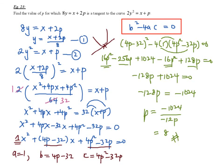The second type is when a straight line intersects the curve at only one point — that is, when the straight line is the tangent to the curve. They normally use the phrase 'tangent to the curve,' which implies intersection at only one point. The condition is b squared minus 4ac equals 0.